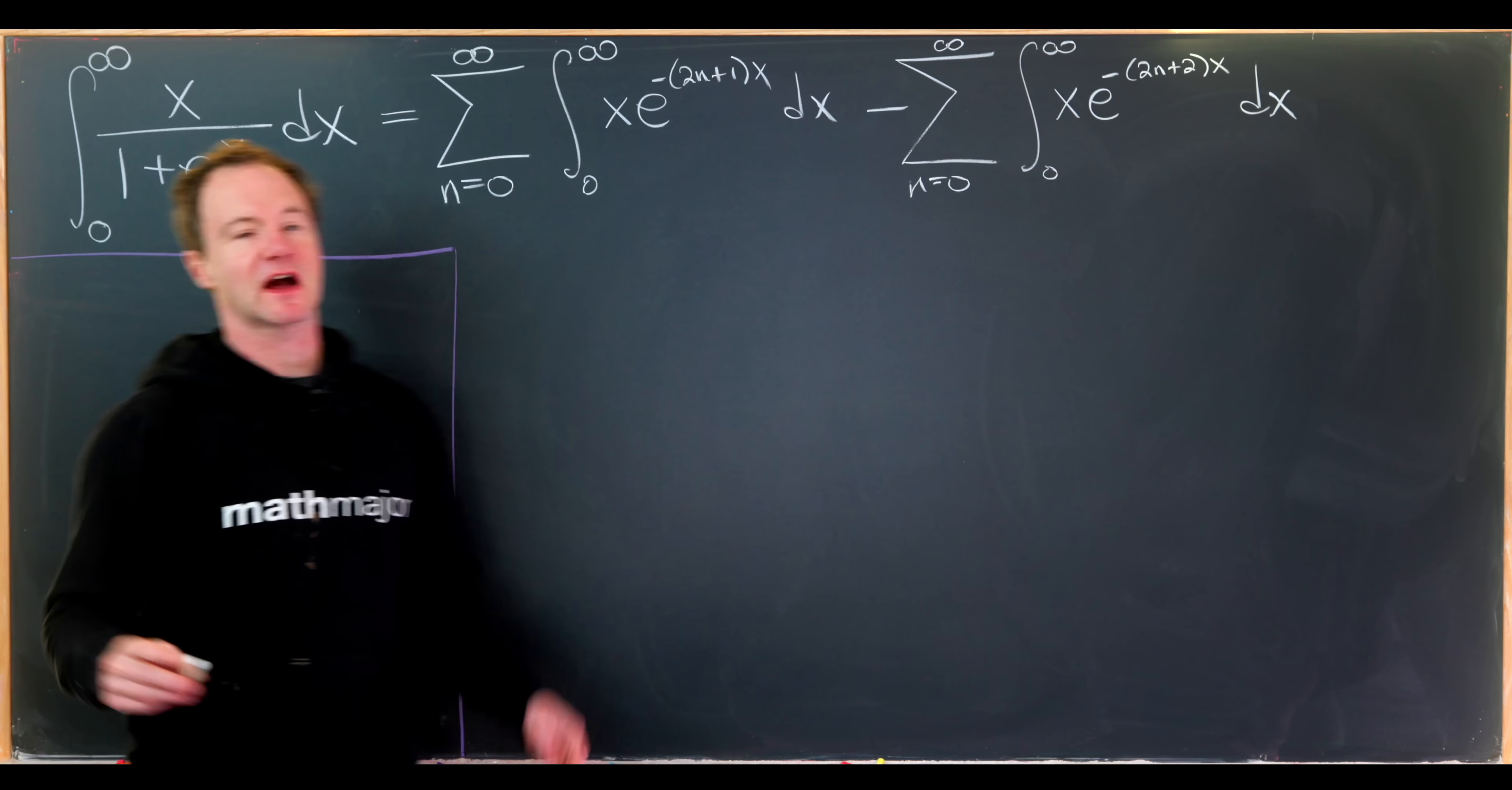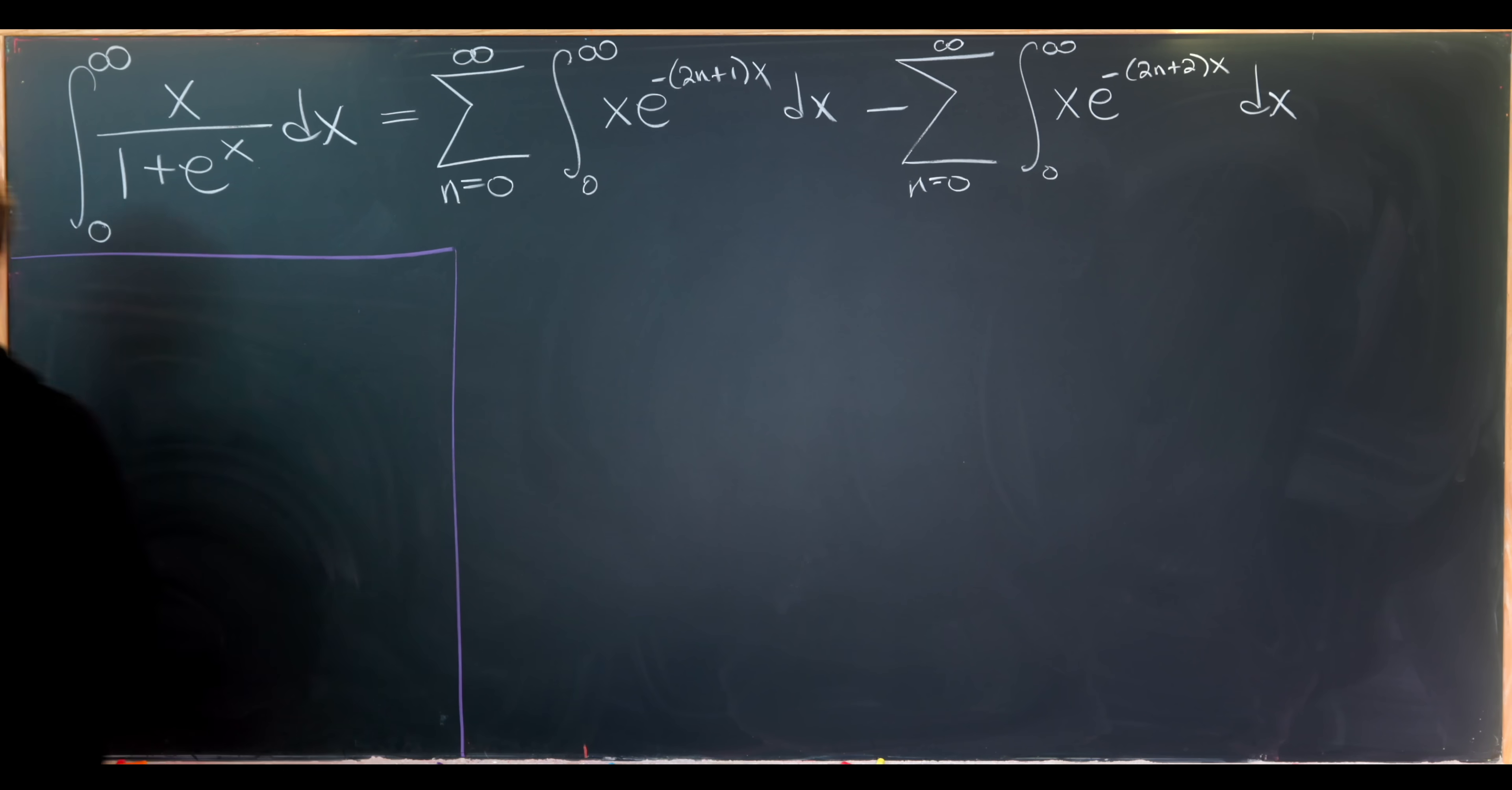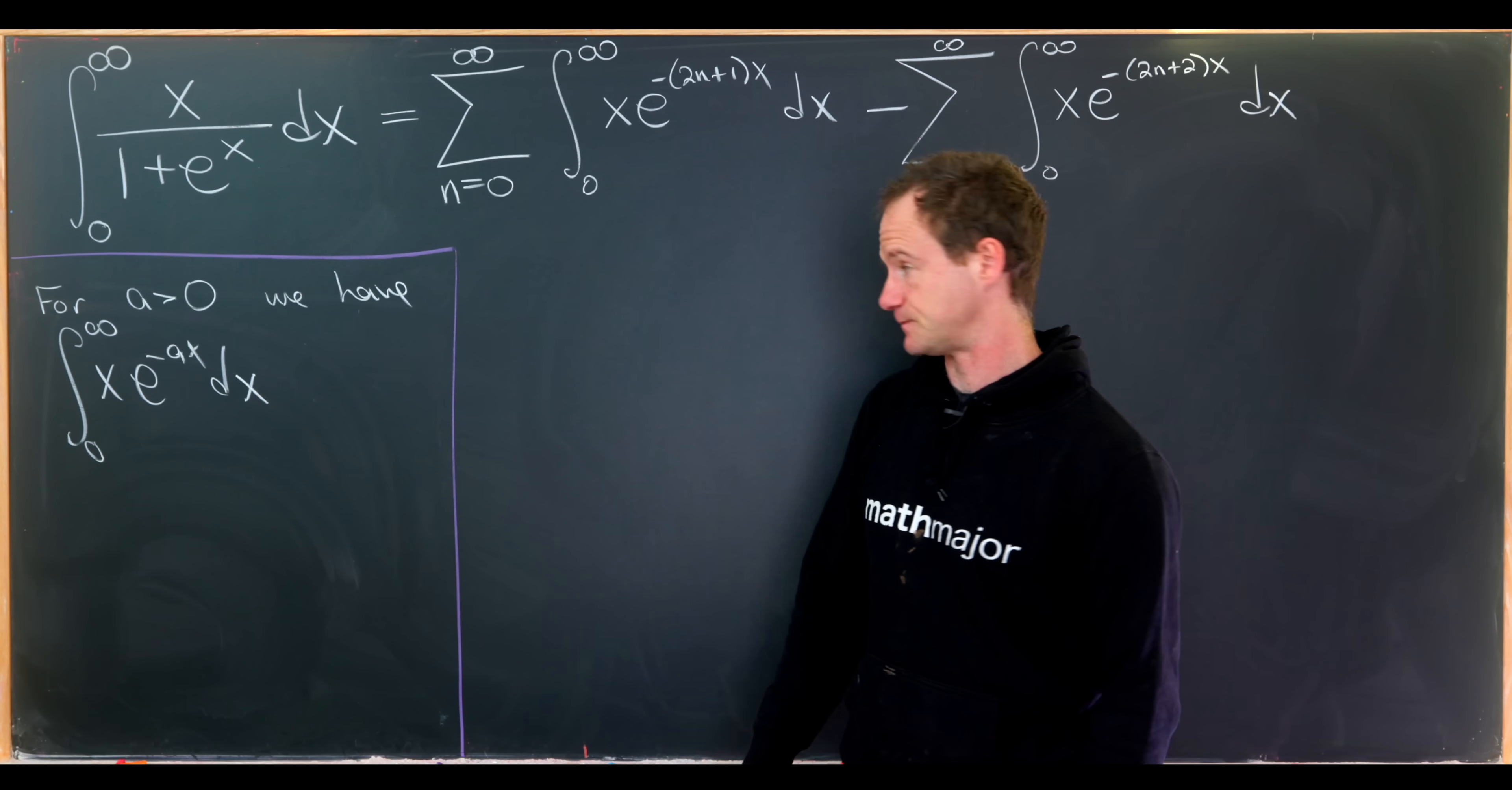So this is where we ended up. We've got our goal integral is equal to the sum as n goes from 0 to infinity of the integral from 0 to infinity of x e to the minus 2n plus 1 times x dx, and then a similar thing with a 2n plus 2. And that motivates us to describe a more general integral. So let's notice that for a bigger than 0, we have the integral from 0 to infinity of x times e to the minus ax dx. So if we can find a nice form for this, then we'll have a form for each of those.